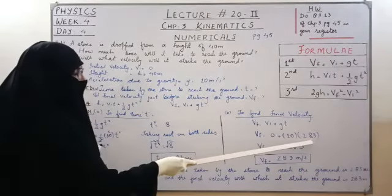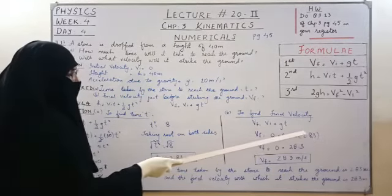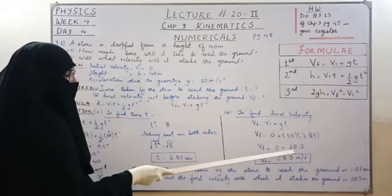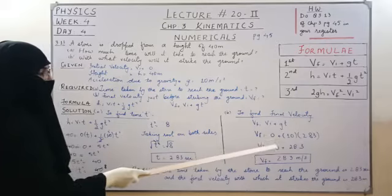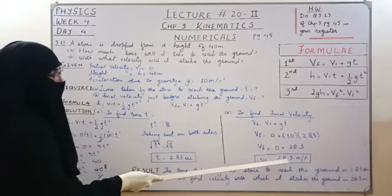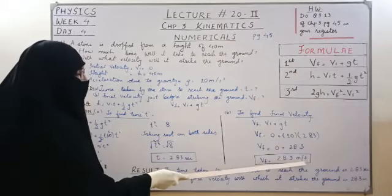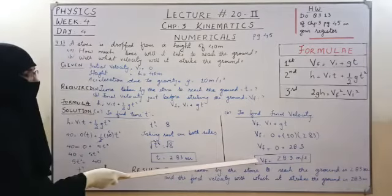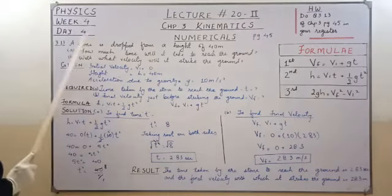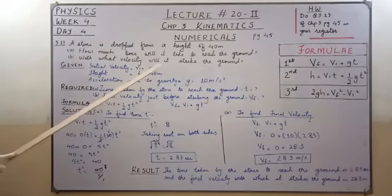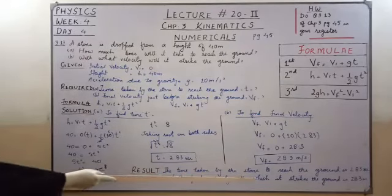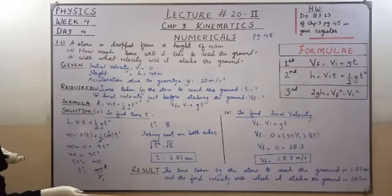After calculation, 28.3 meter per second, which is the final velocity with which the stone strikes the ground, just before striking the ground the final velocity is 28.3 meter per second.